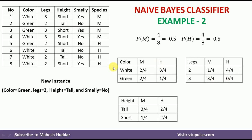With the same approach, we calculate the conditional probabilities for height. The two possible values are tall and short. Tall appears three times in M examples, giving a probability of 3/4, and two times in H examples, giving 2/4. Short appears one time in M, giving 1/4, and two times in H, giving 2/4.